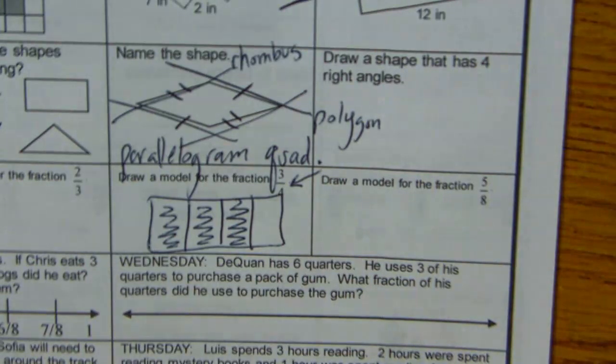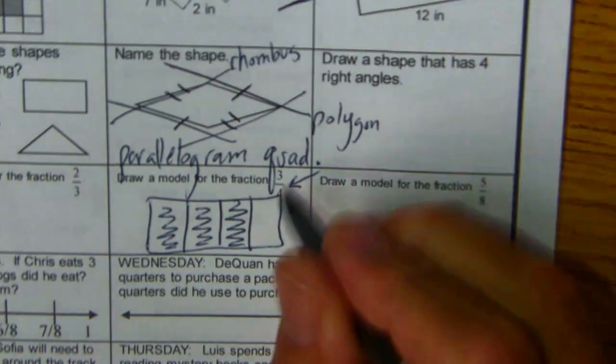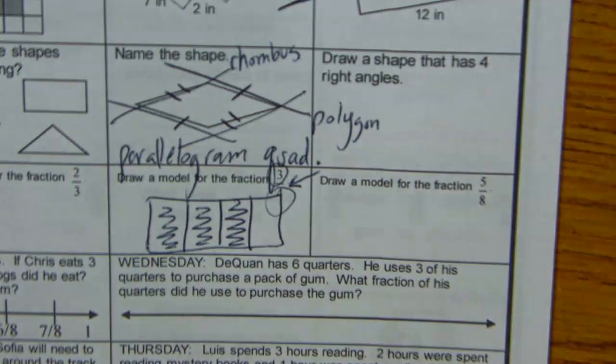In a fraction, the top number is called the numerator, the bottom number is called the denominator.